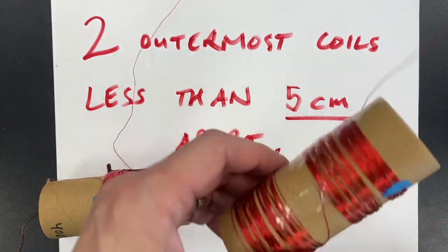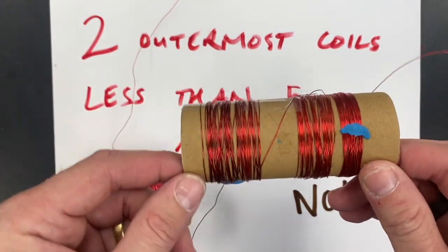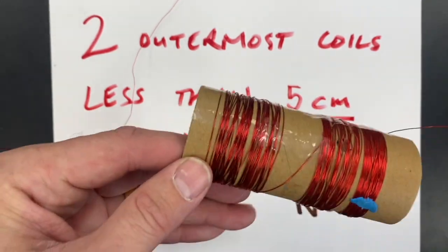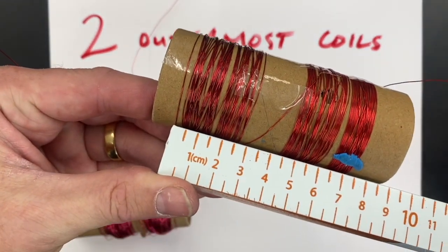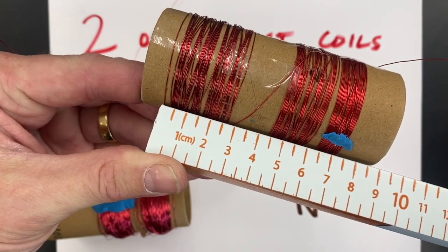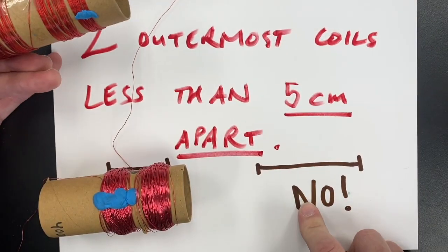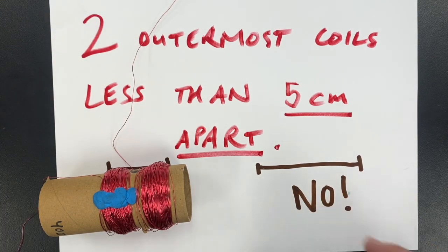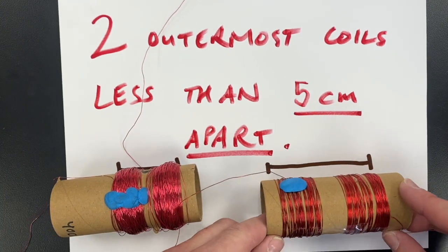However, this one is likely not going to work. If I was to continue wrapping around this, the distance between the outermost coils here is more like seven and a half or seven centimeters. That's not close enough to the magnets in order for the generator function as well as we need it to.